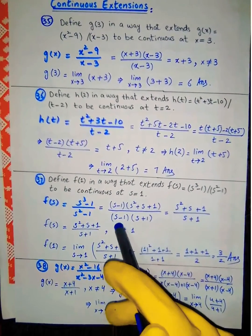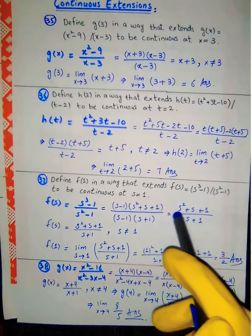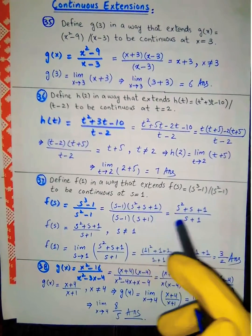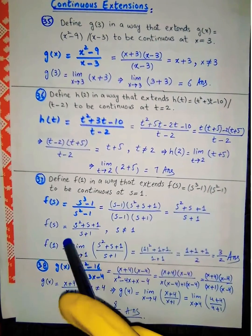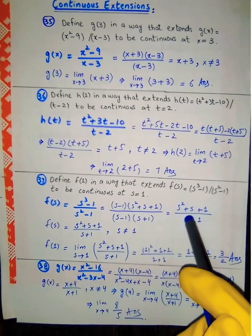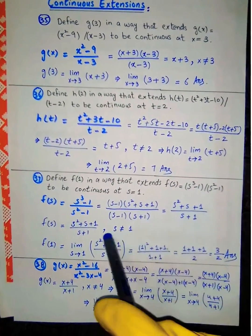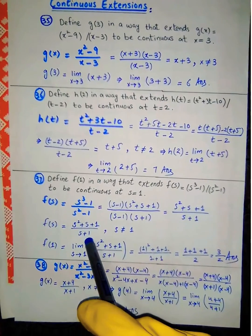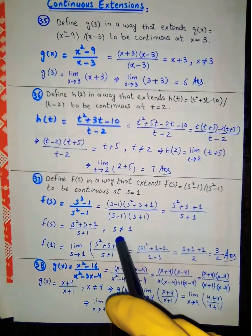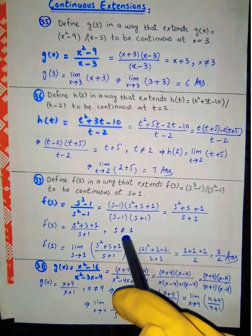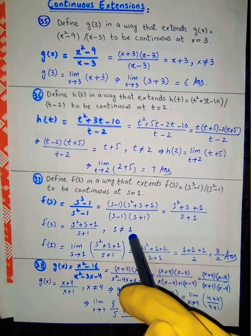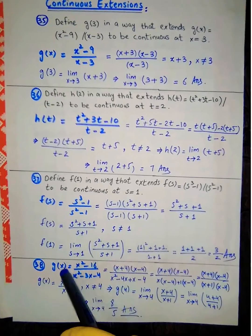After cancelling the factor (s - 1), we get a simplified expression. Since s is not equal to 1, we proceed.